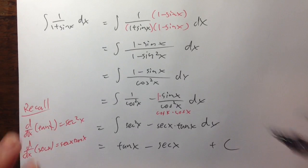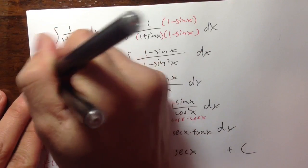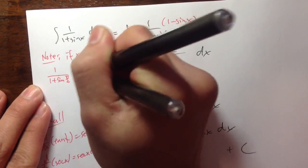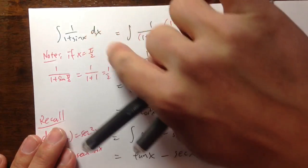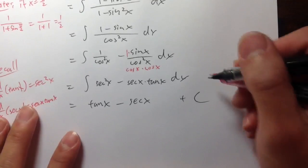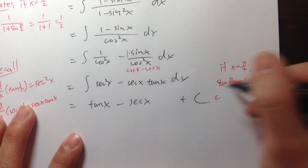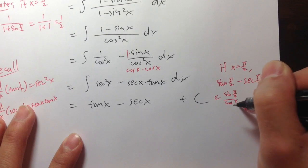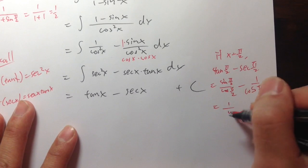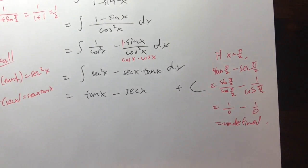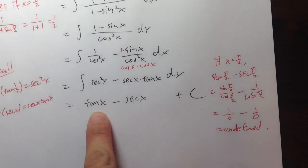But notice that this is actually a problem. If x equals π/2, let's check the integrand: we get 1 over 1 plus sin(π/2), which is 1 over 1 plus 1, equal to 1/2 — well defined. However, if you look at tangent(π/2) minus secant(π/2), tangent(π/2) is sin(π/2) over cos(π/2), and secant(π/2) is 1 over cos(π/2). Since cos(π/2) equals 0, both are undefined. So the original function is defined at π/2, but our antiderivative is not — there's a problem.